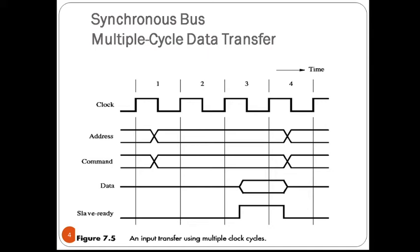An example is shown in the figure. During clock cycle one, the master sends an address and command information on the bus requesting a read operation. The slave receives this information and decodes it. On the following active edge of the clock, at the beginning of clock cycle two, it makes a decision to respond and begins to access the requested data.